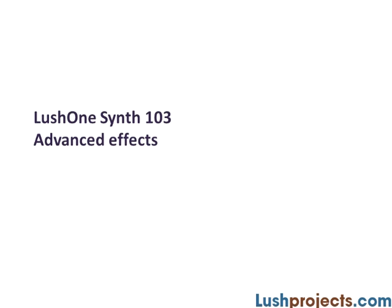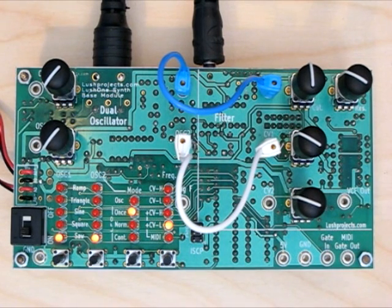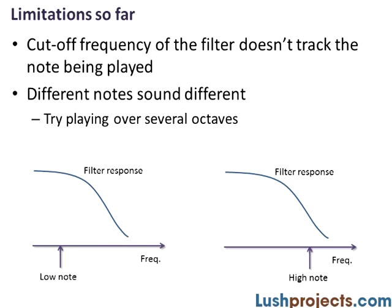I'm going to start today with a bit of a problem. I set this note up that I really quite like, but if I play over a few octaves, you can hear that the note sounds different in the different octaves. The reason for that is that the sound of the note depends on the relative position of the filter cutoff to the frequency of the note we're playing. At the moment we've set up a fixed position for the filter cutoff regardless of the note, and that means we get this different effect at different note frequencies.